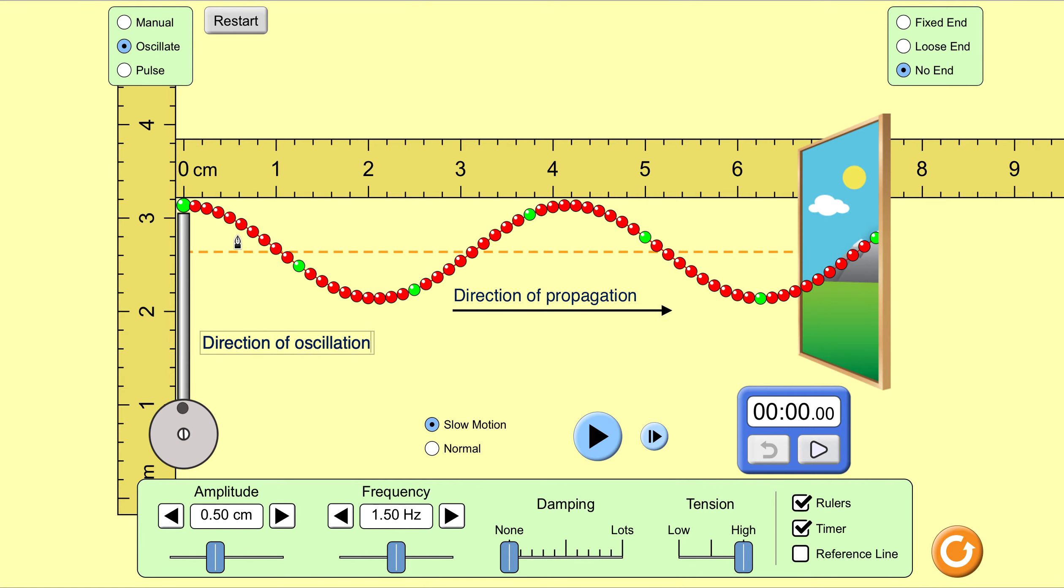The direction of oscillation—oscillating is this movement up and down. So our direction of oscillation would be this direction and that direction. The direction of oscillation is up and down, because the wave is being generated up and down, and then it's propagating along from left to right.